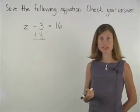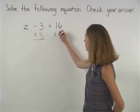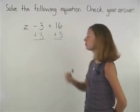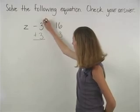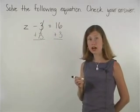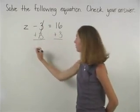If we add 3 to the left side, we must also add 3 to the right side. Notice that on the left side, minus 3 and plus 3 cancel each other out, so we're simply left with z.